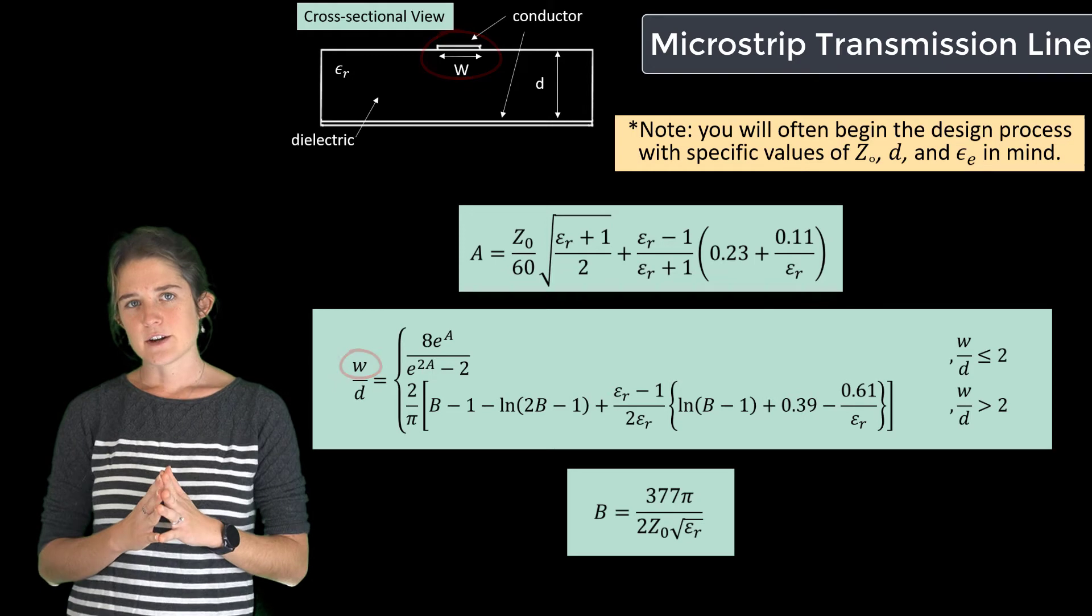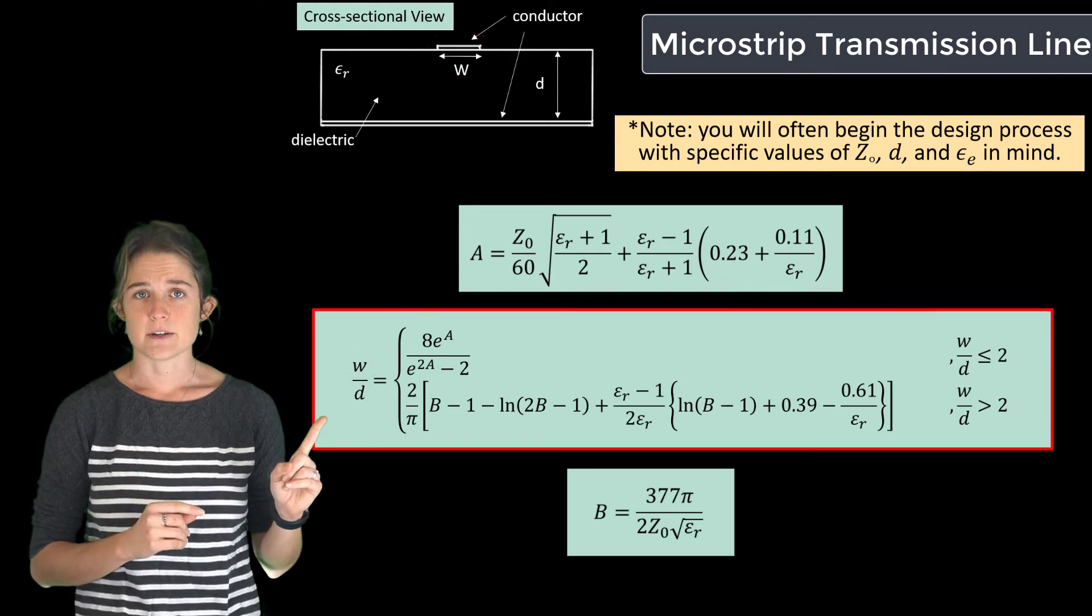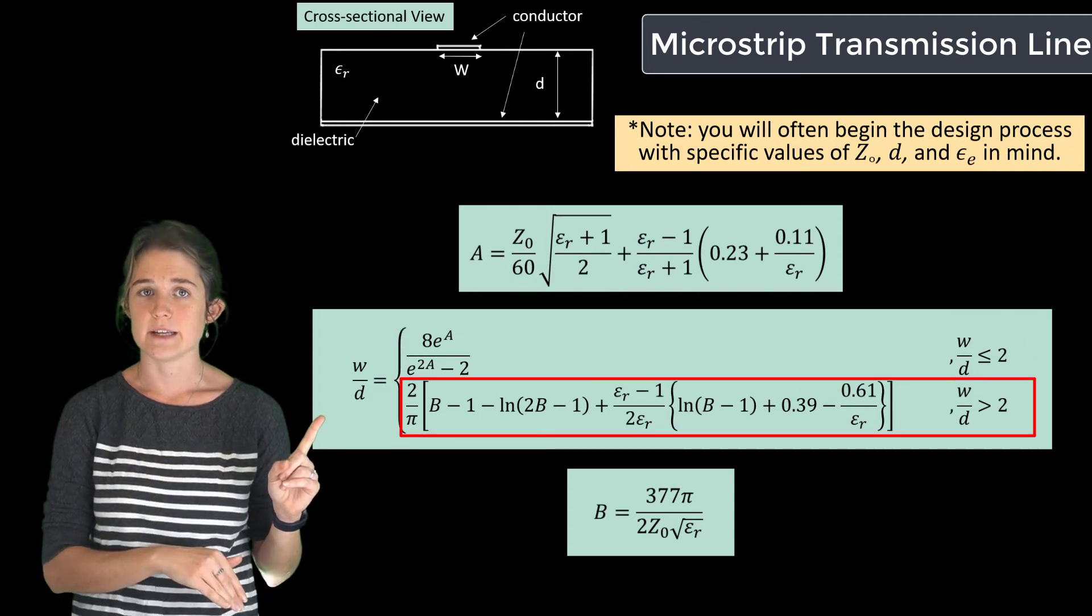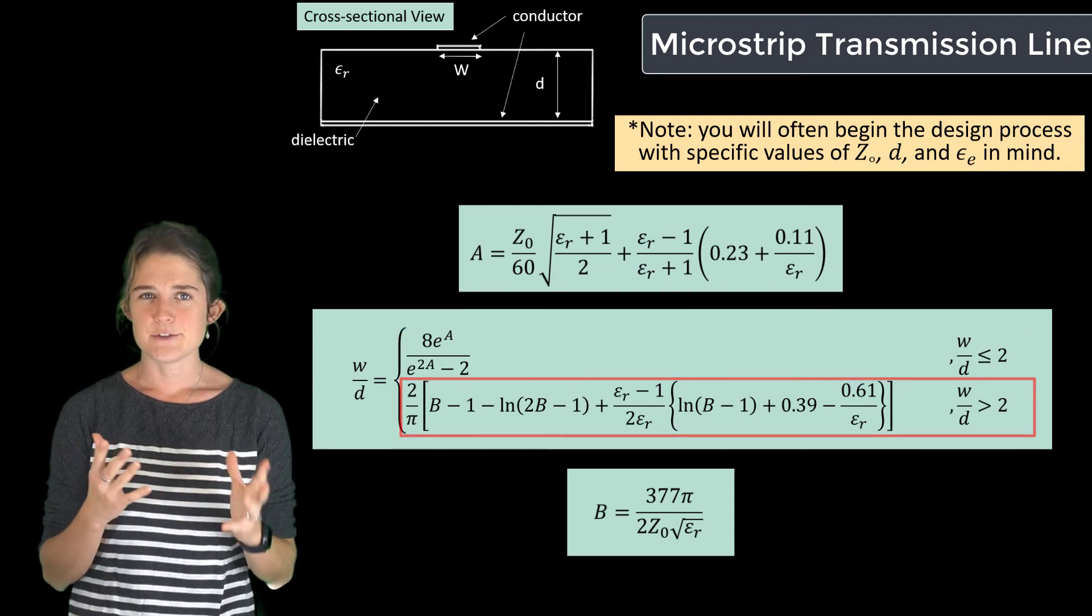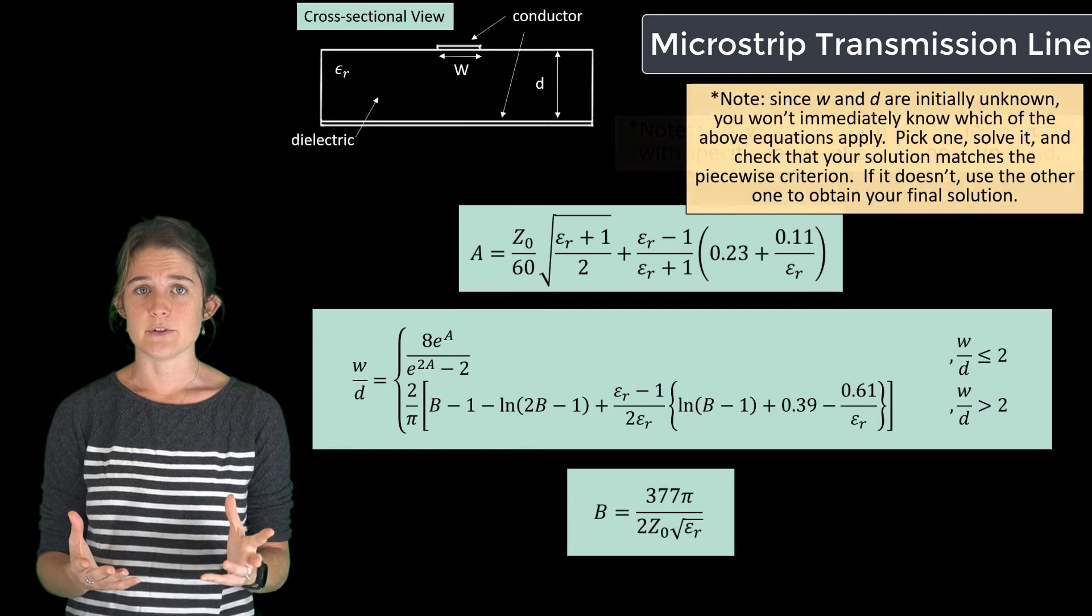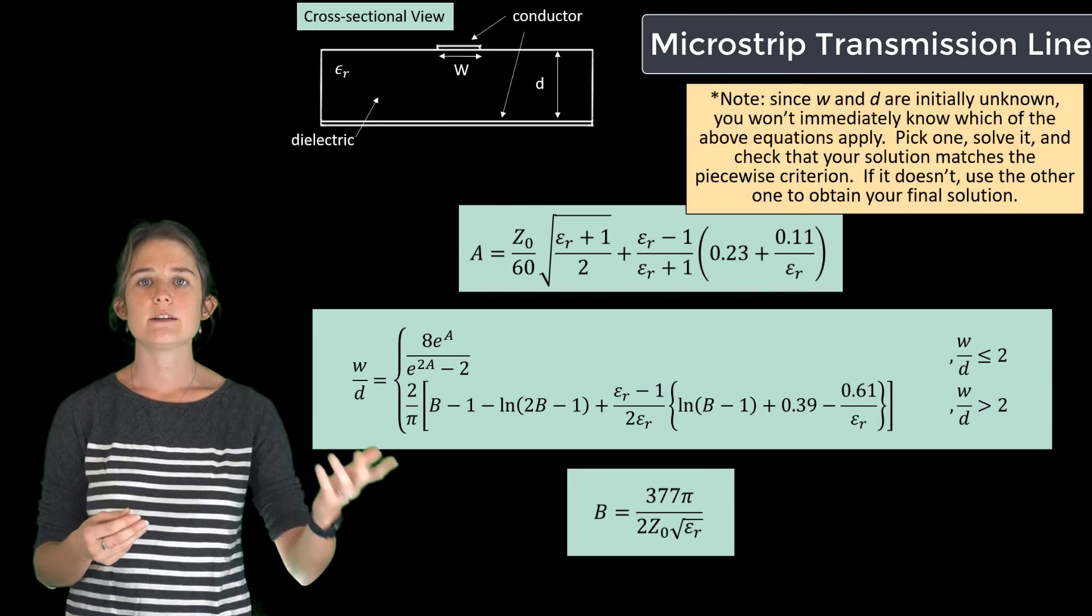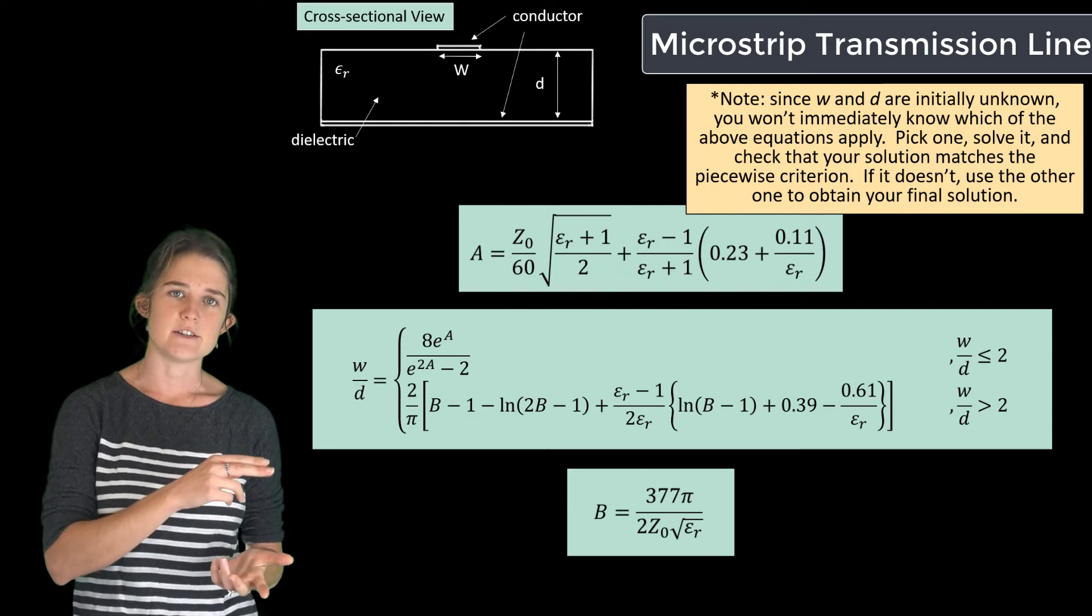Note that you have to start your design with this piecewise function, which has one function if W over D is less than 2, and another equation if W over D is greater than 2. Since you don't start out knowing the ratio of W to D, you just have to pick one, run with it, and when you get to your solution, go back and check that it matches the criteria.